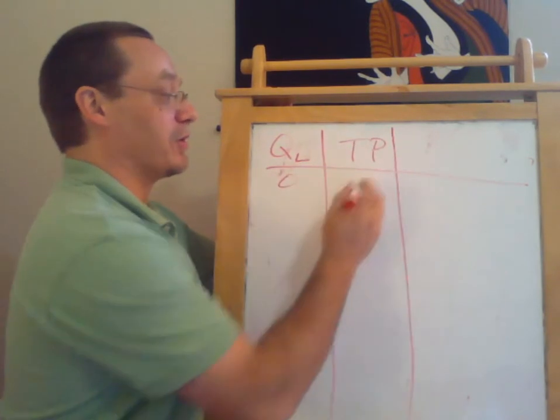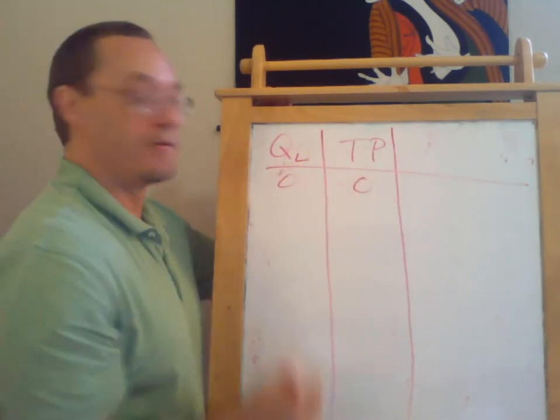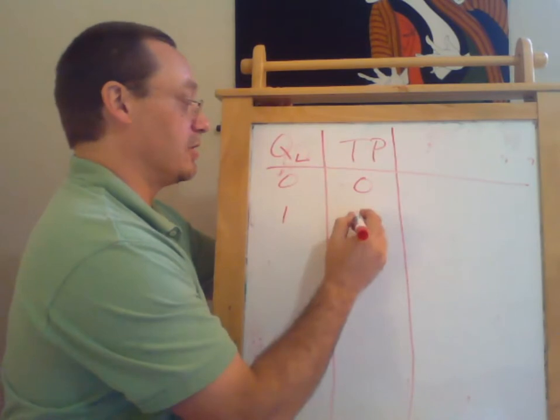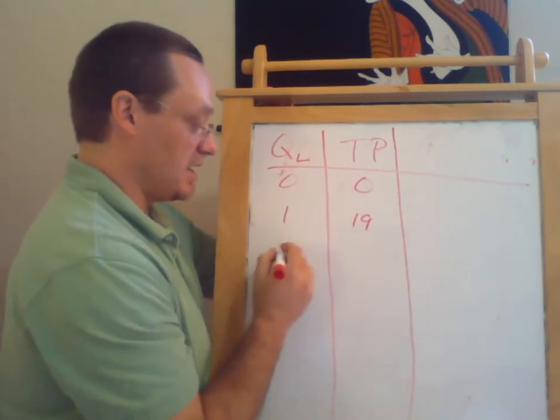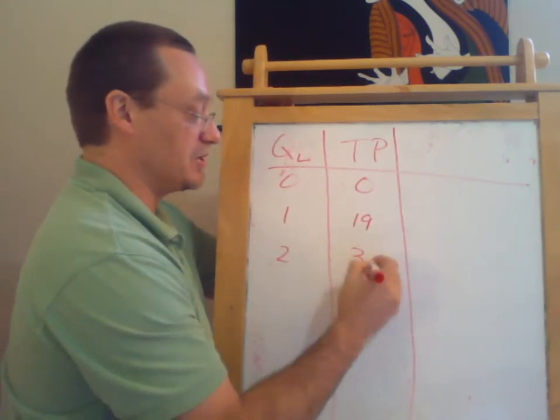So if we have zero workers, say for instance, we produce zero. If we have one worker, say we produce 19. If we have two workers, say we produce 36.